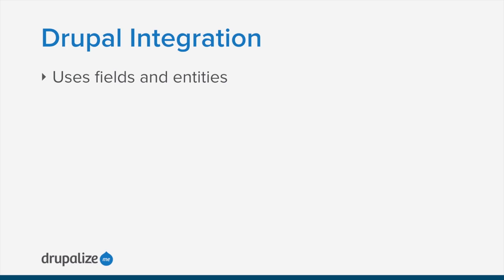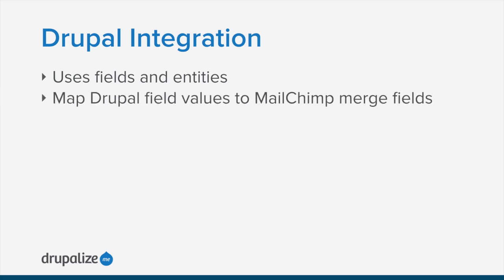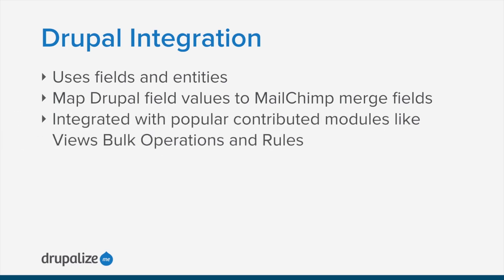In addition to the fields and entity system and the ability to merge values from Drupal fields into MailChimp fields, the MailChimp module also provides integration with a handful of other popular contributed modules like the views bulk operations module and the rules module — both are really powerful integrations. It also provides support for listening to MailChimp's webhooks, so we can configure things such that anytime an interaction happens with a MailChimp list, MailChimp can ping our site and say something happened. For example, if someone unsubscribes from a list via an email link, MailChimp pings Drupal, and Drupal updates that user's account so it reflects the unsubscription automatically.